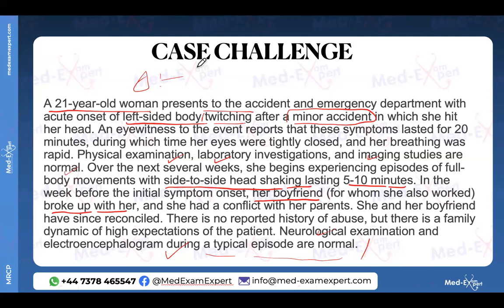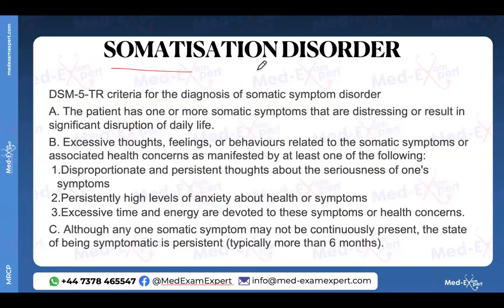In the week before initial symptom onset, her boyfriend broke up with her, and she had a conflict with her parents — though they've since reconciled. There's no reported abuse but there are high family expectations. Neurological exam and EEG during a typical episode are normal. Answers coming in: panic attack is a differential, but the closest answer is somatization disorder — confirmed.